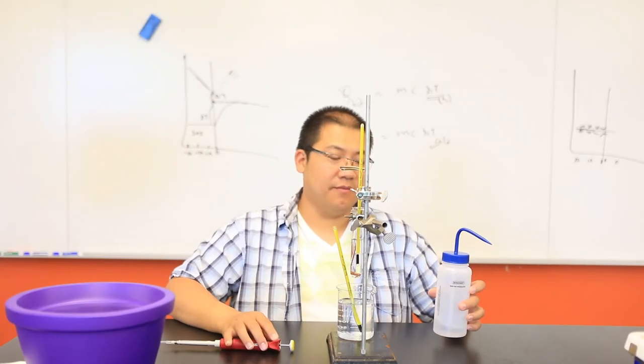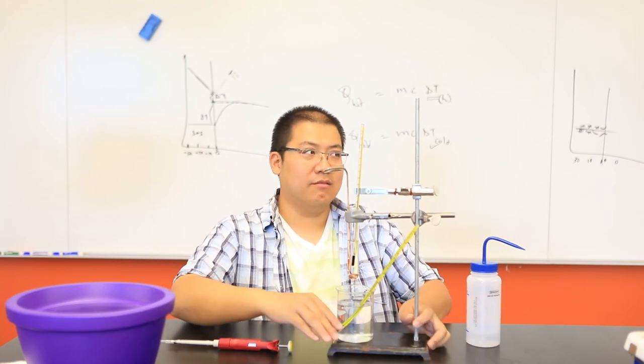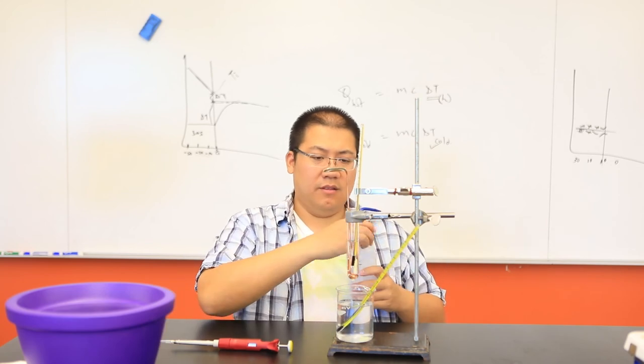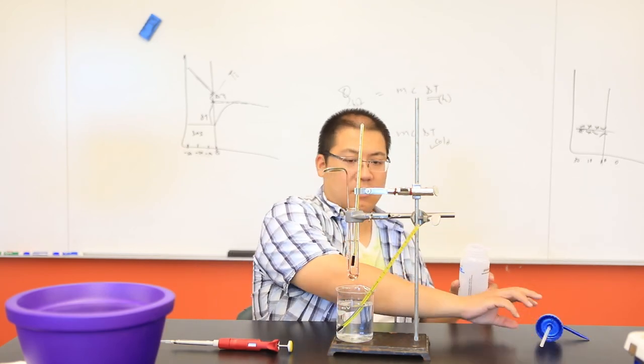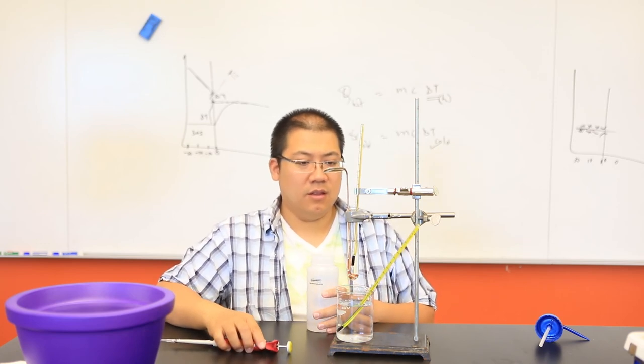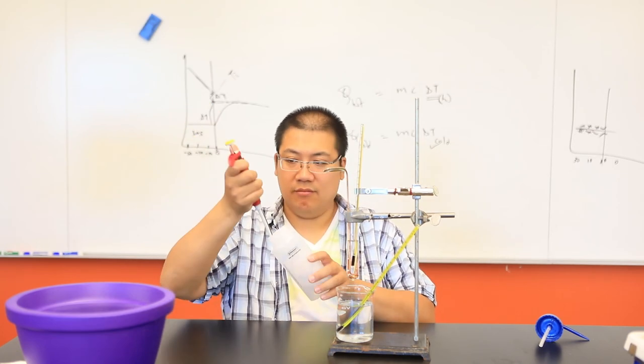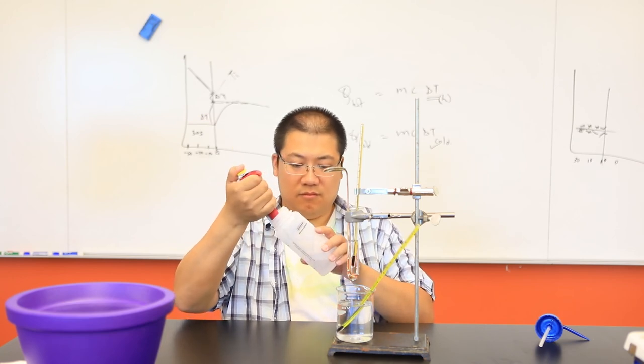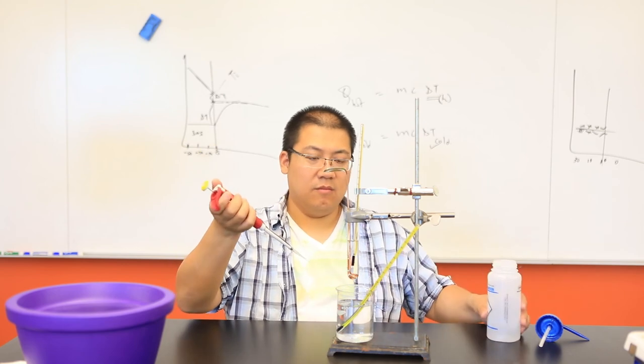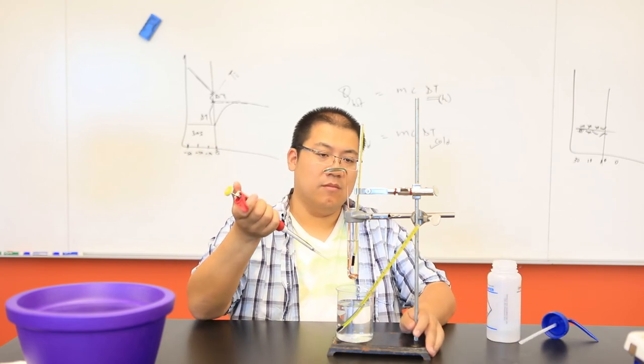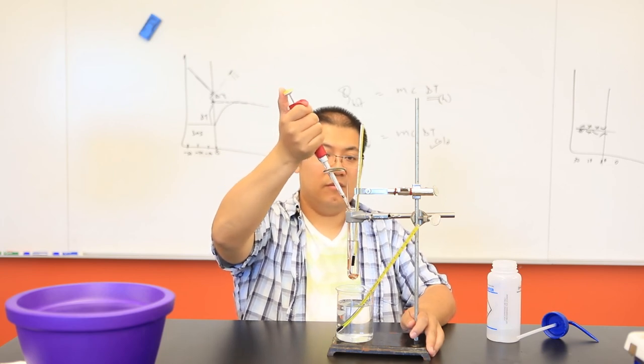The goal of the experiment is to determine the KF value for our sample, which is our solvent T-butanol. We're going to be adding 0.2 grams of our solute. In this case, the solute is water. The addition of the solute should lower the freezing point of our pure solvent.